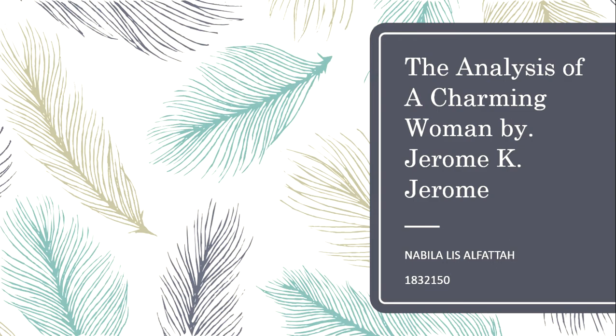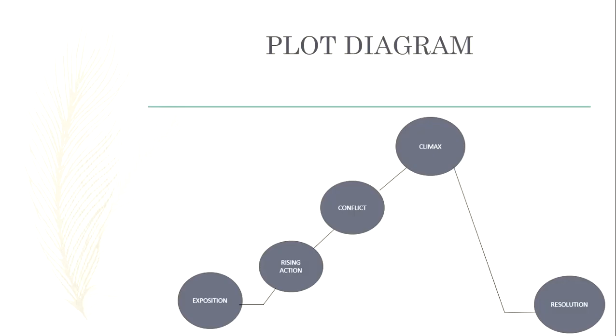So let's start the analysis. First is plot. I put the plot diagram to make the analysis easier. As you see on the slide, plot has 5 steps. The first step is exposition. Exposition is the beginning of the story. The beginning of the story is when a friend introduces Mrs. Clifton to Mr. Anybody. They began to get along with chatting.